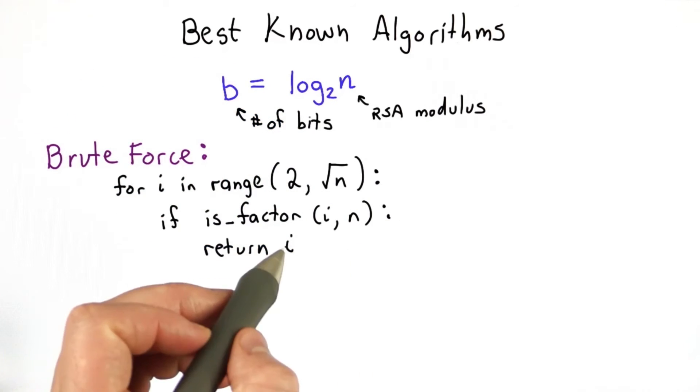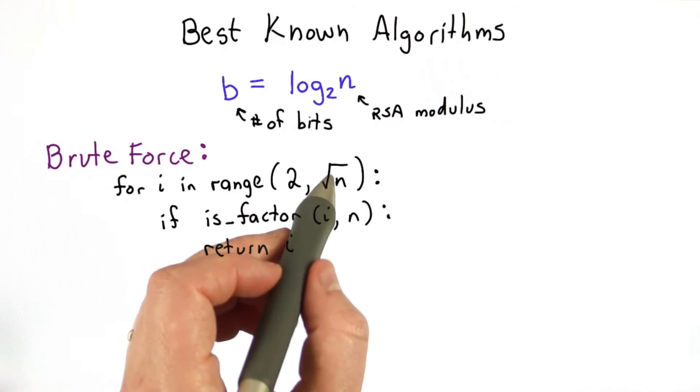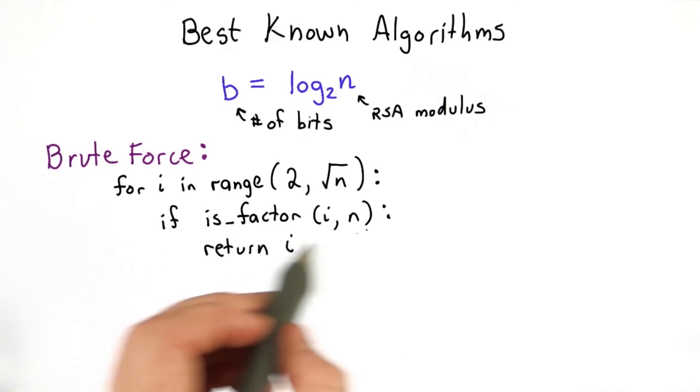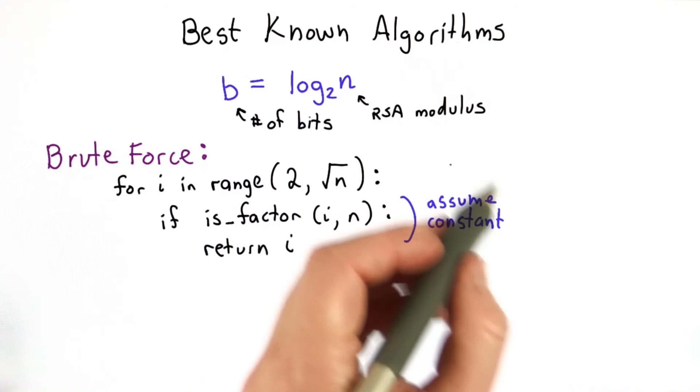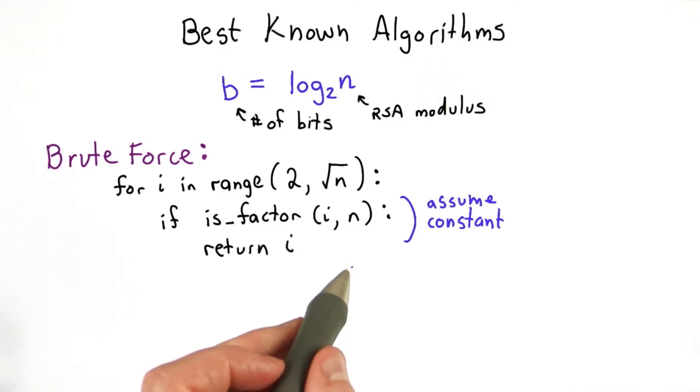So we could try a brute force approach, which would go through all the numbers from 2 up to the square root of n, checking whether each one is a factor. If it finds a factor, then it returns that. Let's be optimistic and assume, unrealistically, that we could do this factoring test, which could be done by finding the greatest common divisor of the two numbers in constant time.